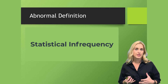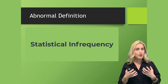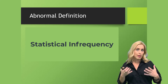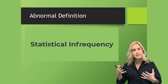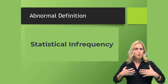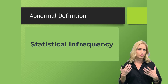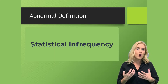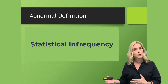Statistical infrequency is when we're looking at someone's behavior or thought process that is not frequent. For example, believing that others are plotting against them, or someone believing they are being watched through a computer or through different parts of their home when in fact no one actually is — that's not something we frequently hear about.